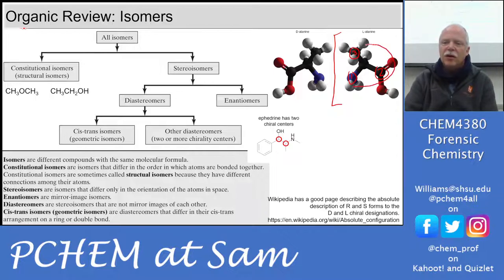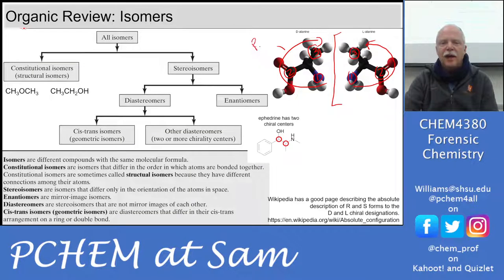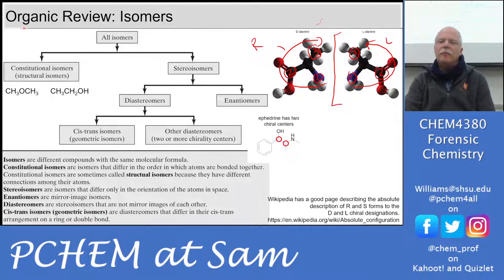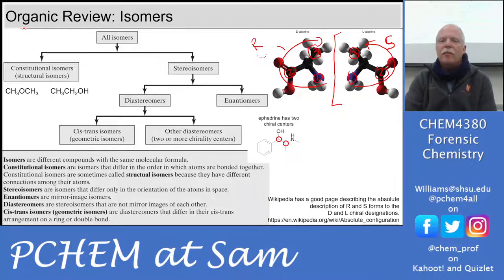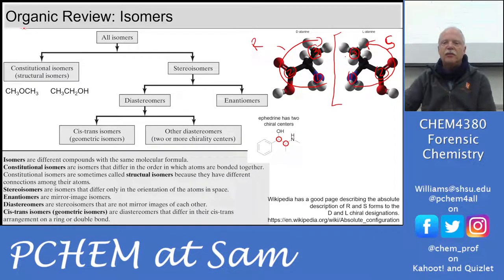If the priority sequence 1-2-3 makes a counterclockwise turn, that gives you S (sinister, Latin for left); if it makes a clockwise turn, that gives you R (rectus, Latin for right). R and S don't map directly to D and L — D and L refer to reactivities. To determine D vs. L you have to dig into additional information, but for R and S you can use the Cahn-Ingold-Prelog priority rules.